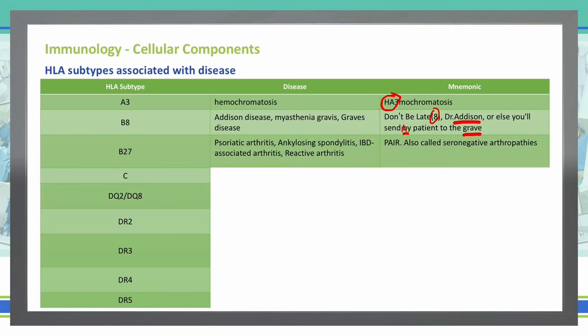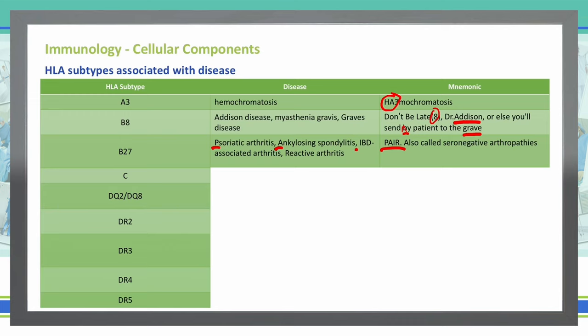HLA-B27 is associated with psoriatic arthritis, ankylosing spondylitis, irritable bowel disease-associated arthritis, and reactive arthritis. You can remember this using the mnemonic PAIR — P for psoriatic arthritis, A for ankylosing spondylitis, I for irritable bowel disease, and R for reactive arthritis. These are also seronegative arthropathies. Psoriasis is associated with HLA-C — there's no great mnemonic here, so just remember that HLA-C is associated with psoriasis.